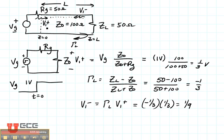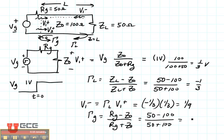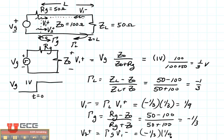Then when V1 minus gets back to the transmitting end, it hits the 50 ohm generator from the 100 ohm transmission line and reflects again. This reflection is controlled by gamma G, equal to RG minus Z naught over RG plus Z naught, which is 50 minus 100 over 50 plus 100, also minus one third. The next forward wave V2 plus equals gamma G times V1 minus, which is minus one third times minus one ninth, giving minus one over 27.